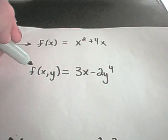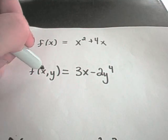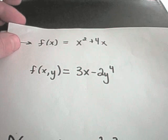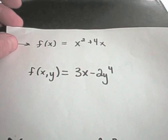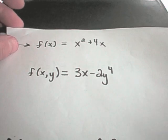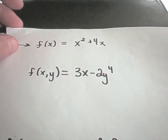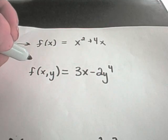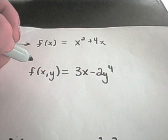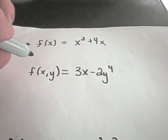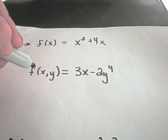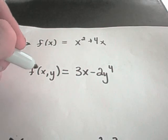For example, suppose I have a function f of xy equals 3x minus 2y to the fourth, and we're going to calculate what are called partial derivatives. The only thing you really have to remember is that when you take the derivative with respect to one variable, you treat the other variable like a constant.